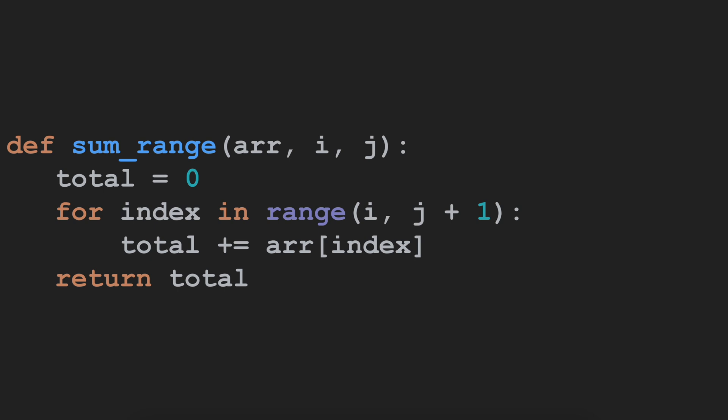Our Python code would look like the following. We are initializing a variable total and we are going from index i to index j, adding that to our total and returning whatever our result is. The time complexity of this solution is O(n).